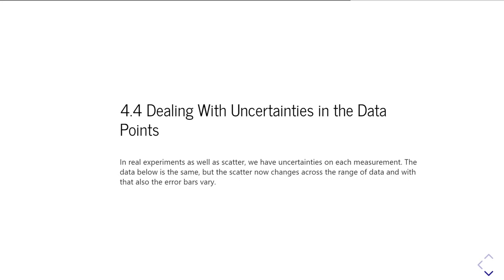So if you have data where you have an uncertainty in x but not in y, then you might have to do something like invert the equation you're trying to fit — so instead of y is f(x), you do x is f(y) and simply swap x and y around in the curve fit. Alternatively, you might have to come up with some way of estimating what an uncertainty in y would look like, given you have an uncertainty in x.